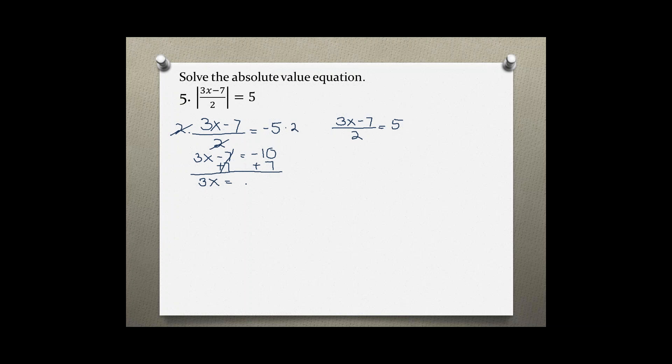3x equals negative 3, dividing by 3 on both sides. x equals negative 1 is the first solution to this absolute value equation.